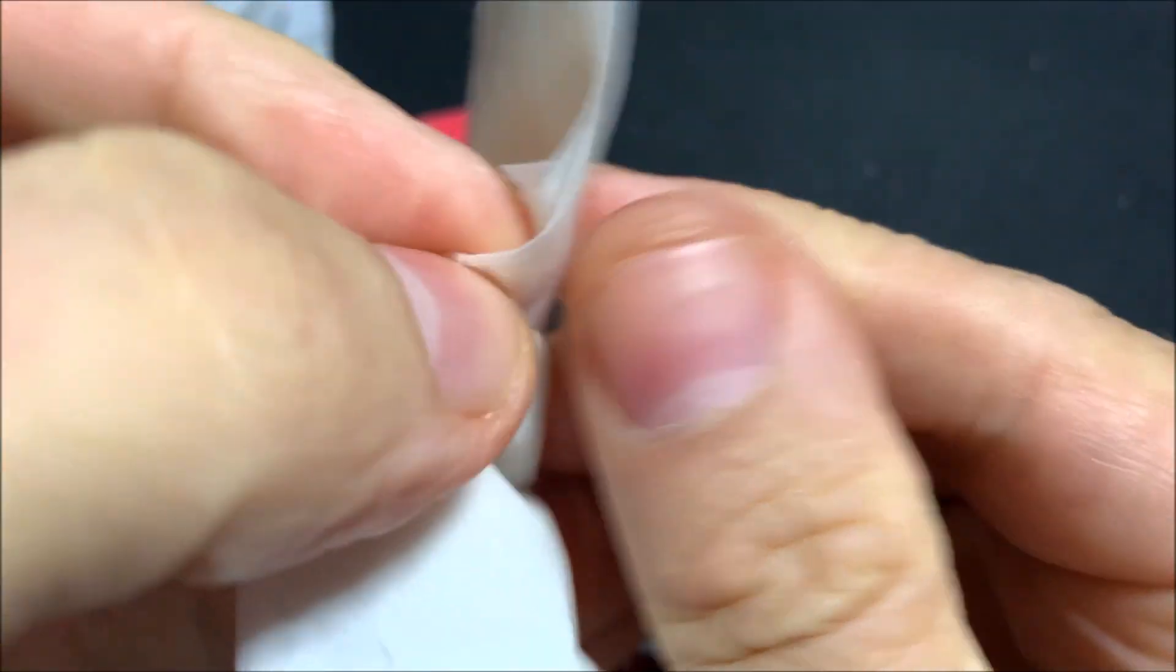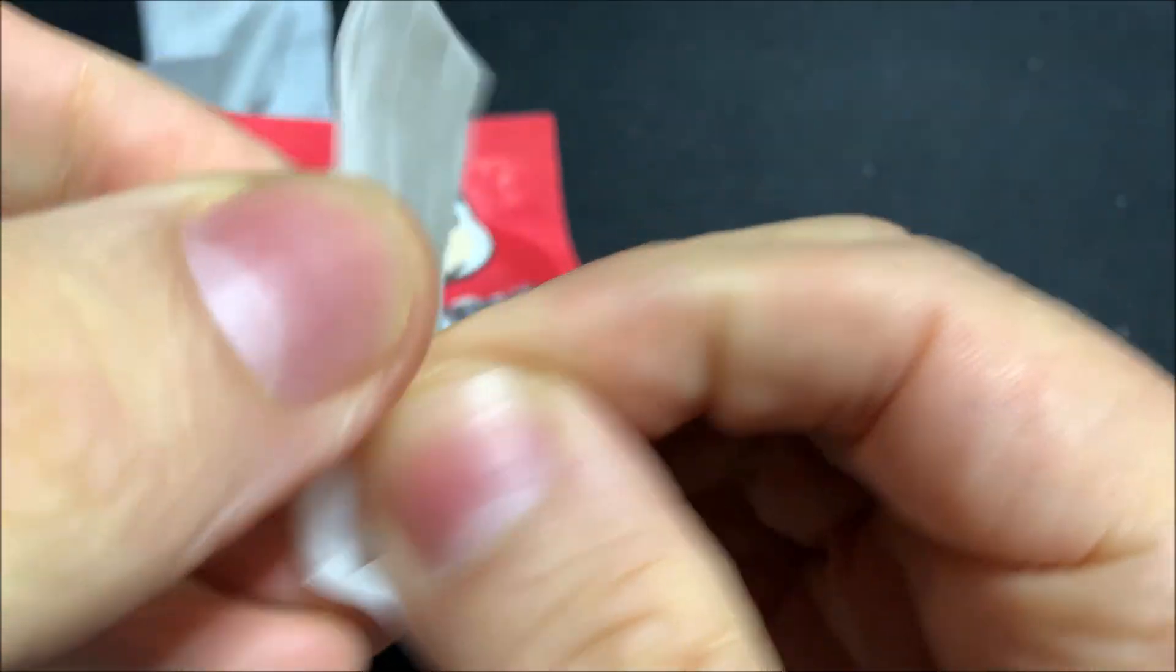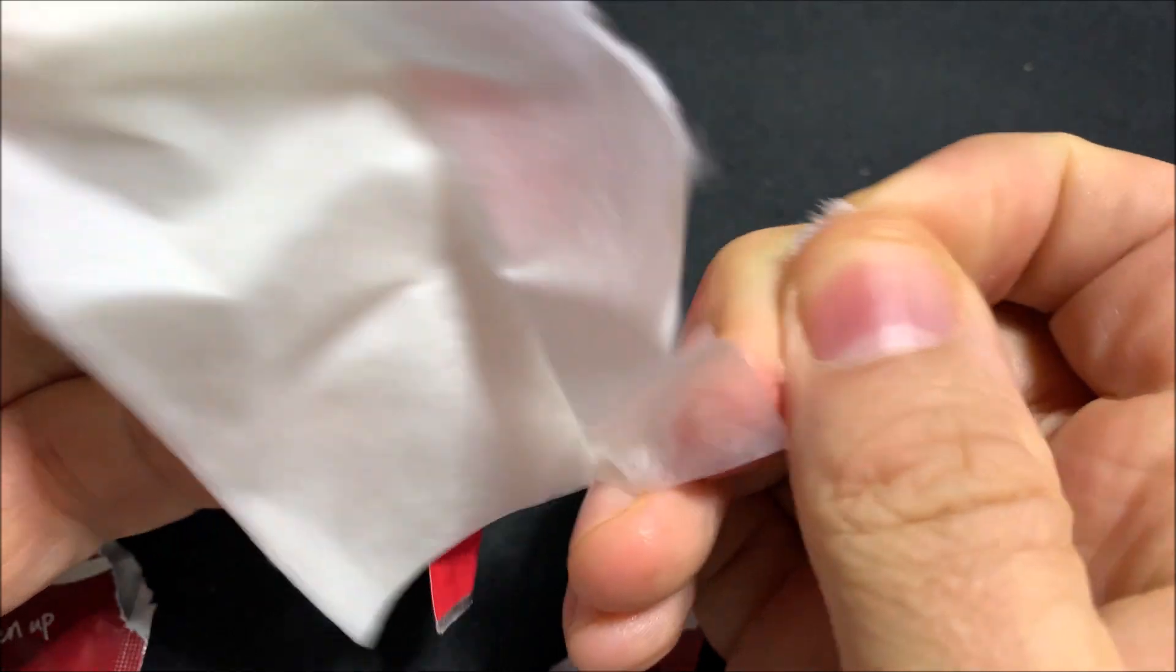Much the same as test number 1, the fibers of the towel fell apart so easily. So test number 3 is a fail 2.